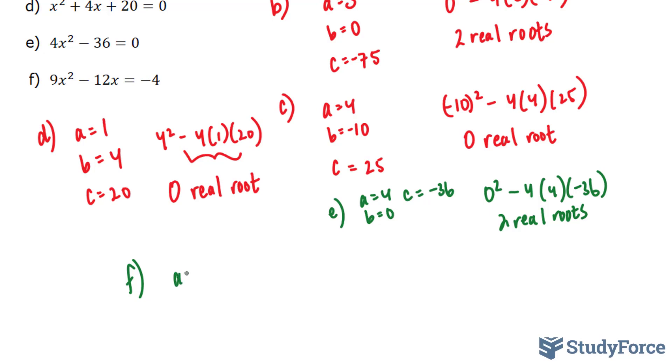And finally, for part f, our a term is 9, our b term is negative 12, and our c term is positive 4. Don't make the mistake of thinking it's negative 4. You have to bring this over so that all the terms are on one side and that it's in standard form.